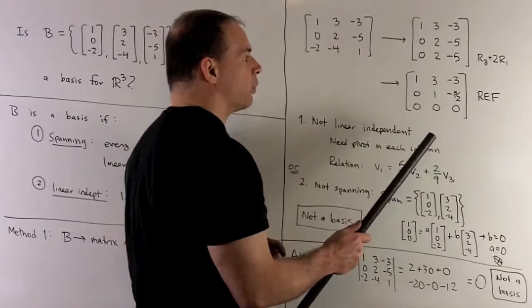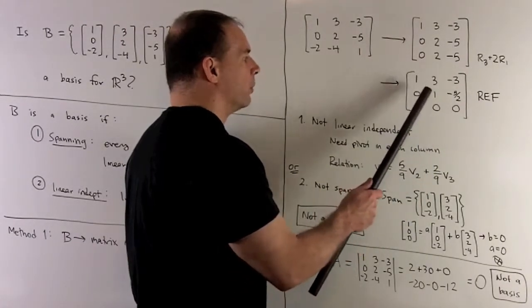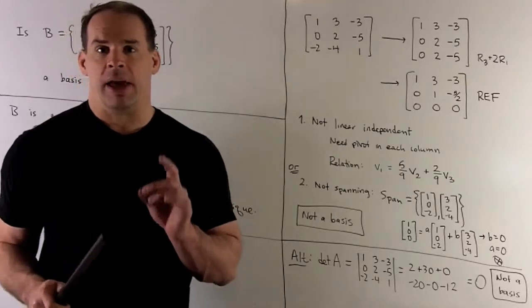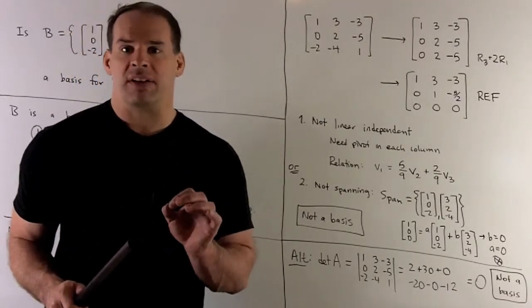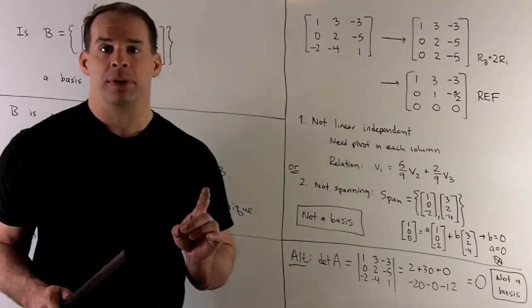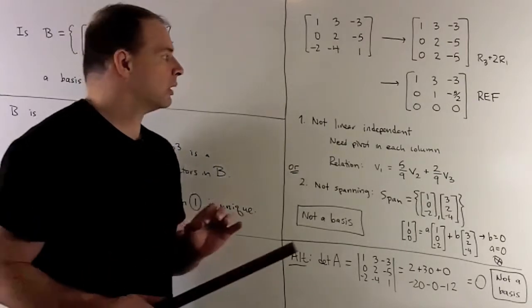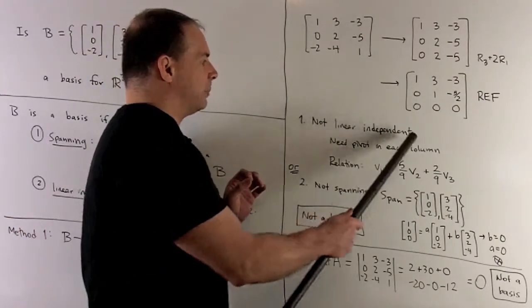That's the row echelon form. Now we see we're not linearly independent. To get that, we would need a pivot in each column, which isn't happening. So we're linearly dependent.